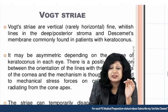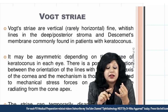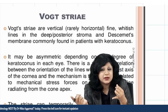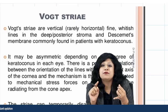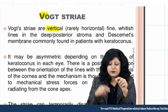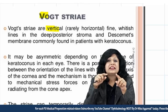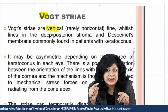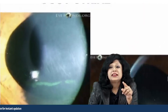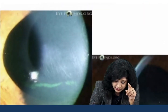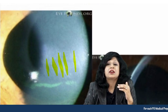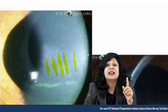Next is Vogt's striae. Remember V for Vogt and V for vertical — these are vertical lines going up to Descemet's membrane. These vertical striations are due to overstretching of the cornea in cases of keratoconus. You can appreciate these vertical lines in the cornea in keratoconus.